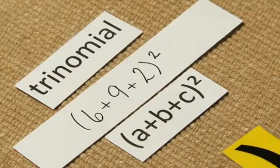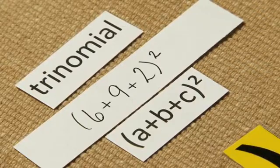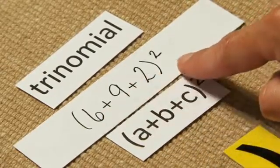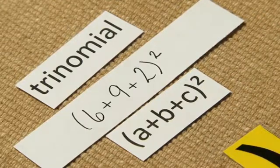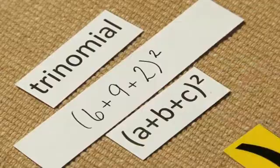This is squaring of a trinomial algebraically. For this example, we will be using the equation 6 plus 9 plus 2 squared. Algebraically, we can represent that as A plus B plus C squared.